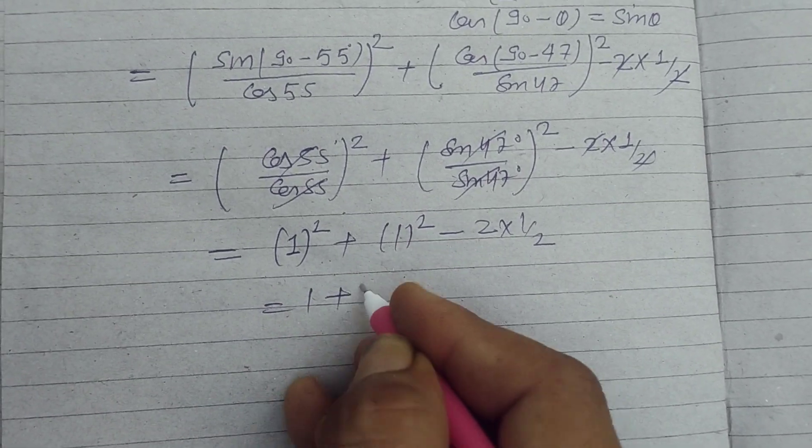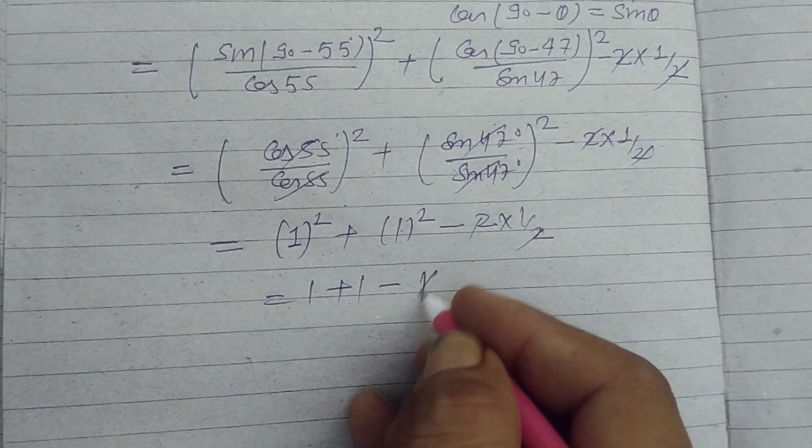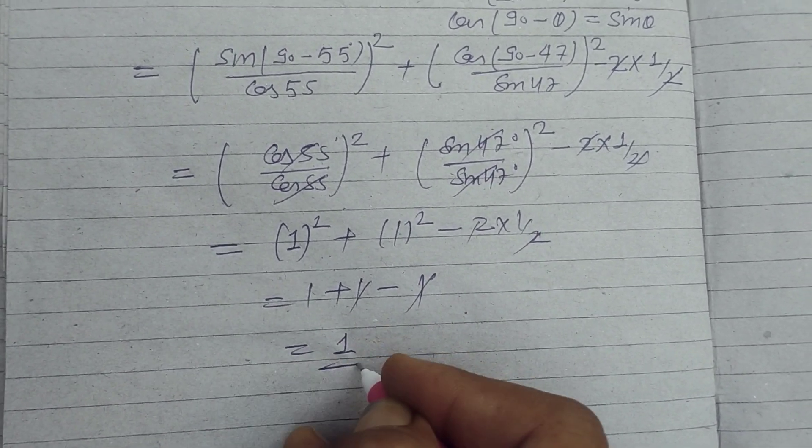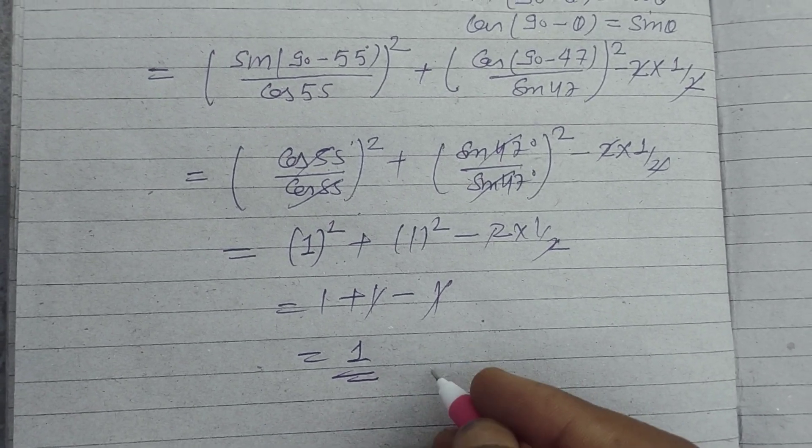So this is 1 plus 1 minus 1. The ones cancel and we get 1. So the answer is 1.